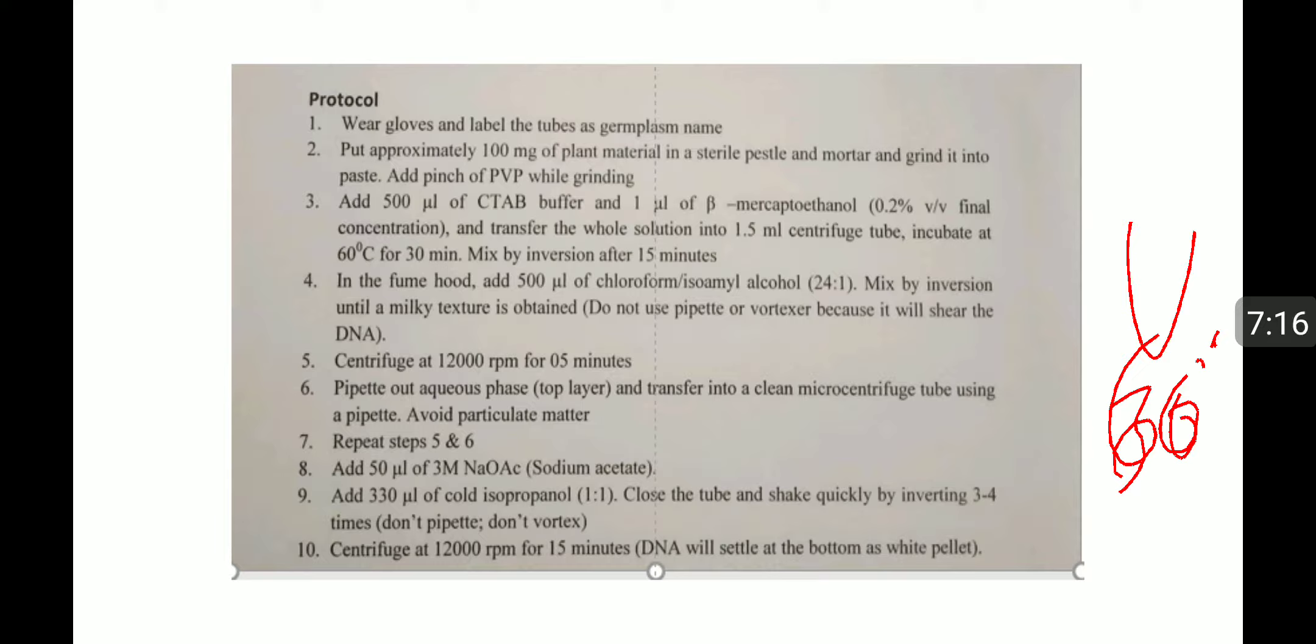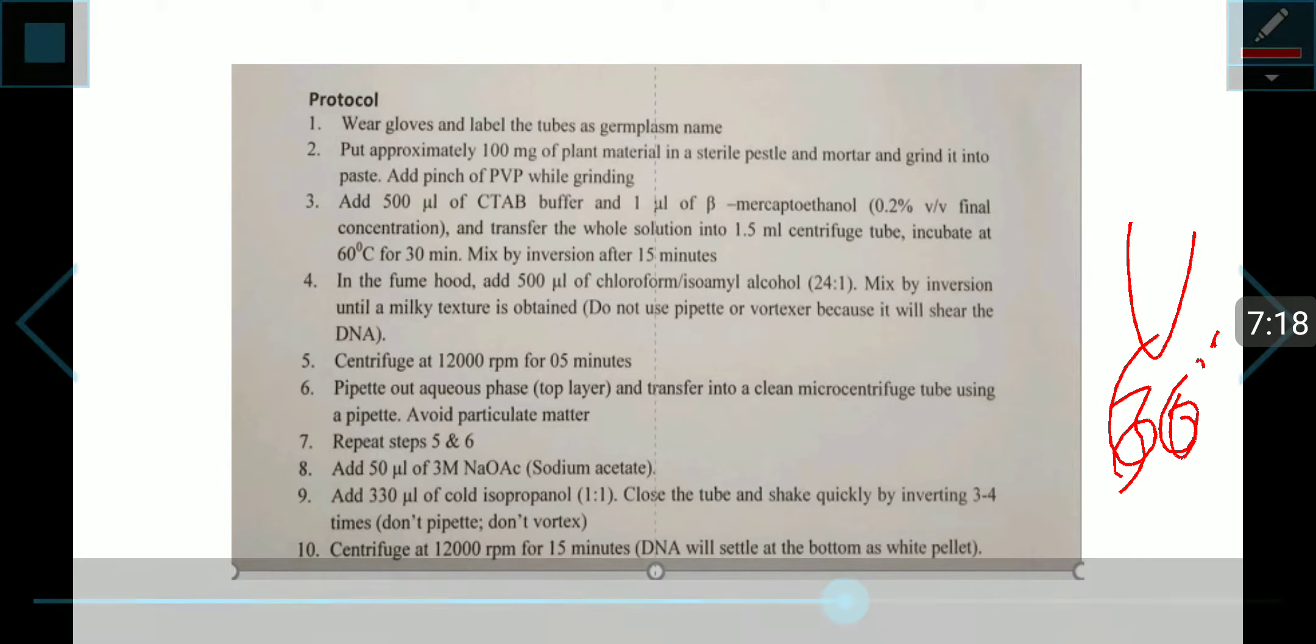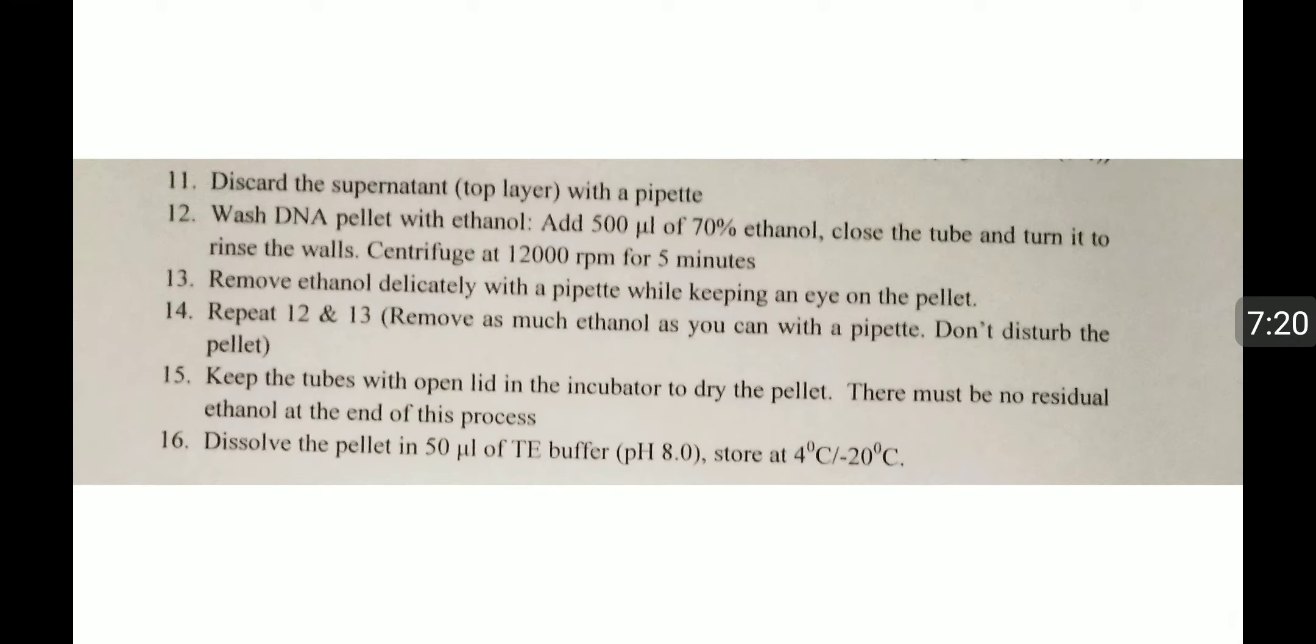Centrifuge at 12,000 RPM for 15 minutes. DNA will settle at the bottom as a pellet. Discard the supernatant. We have to take the pellet. Wash the DNA pellet with 500 microliters of 70% ethanol.